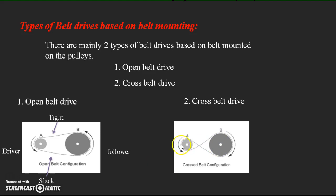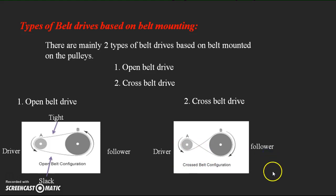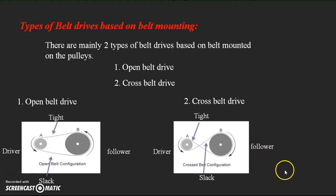In a cross belt drive, the belt is mounted in a cross configuration over the two pulleys. When the driver rotates, the direction of rotation of the follower is opposite to the driver — for example, if one rotates anticlockwise the other rotates clockwise. This is the key difference between open and cross belt drives. In the cross belt drive, if pulley A is the driver, pulley B is the follower, and the side facing more stress becomes the tight side, with the opposite side being the slack side.